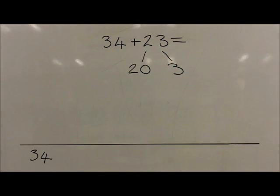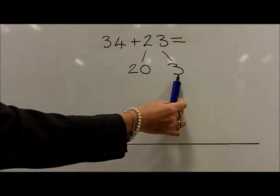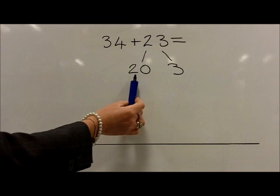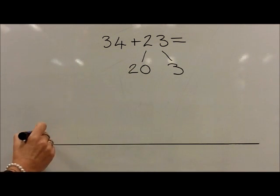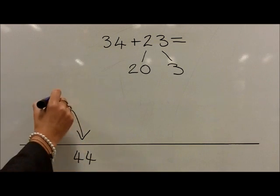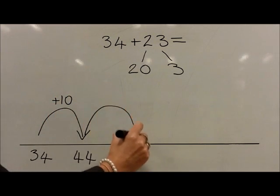At first they count on in tens, then in ones. So for this example, they add on two tens to reach 44, then 54.